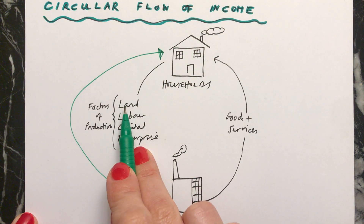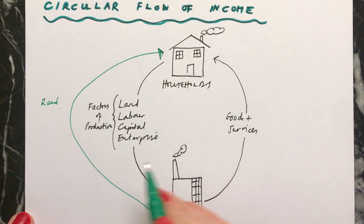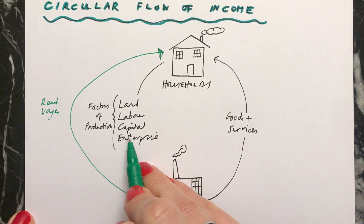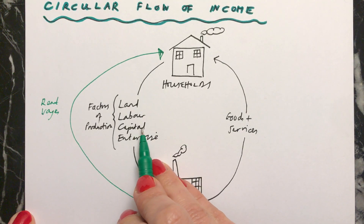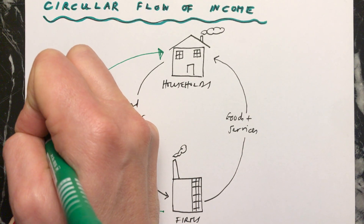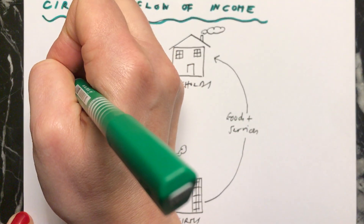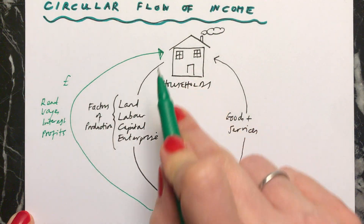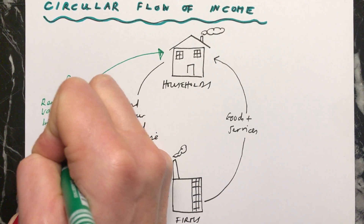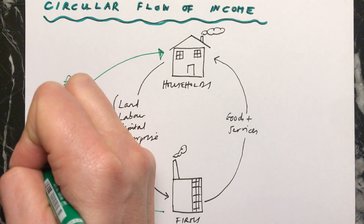When they receive land from the households, the firms pay rent. When they receive labour from the households, the firms pay wages. And when the firms receive the capital — the machinery — and the enterprise, the thinking skills, from the households, we say that they pay the households interest and profits. And all of this money — rent, wages, interest, and profits — together we call income.